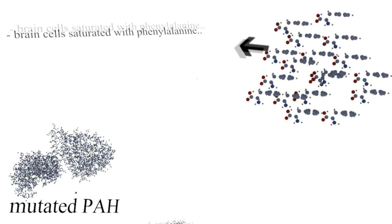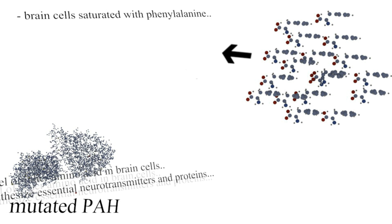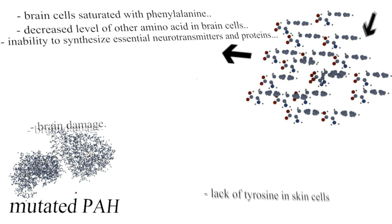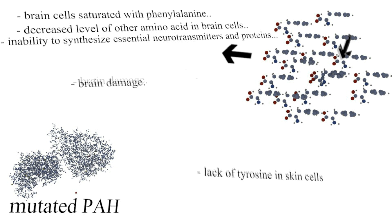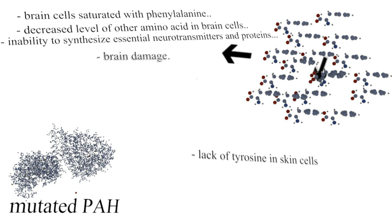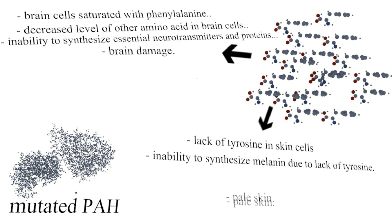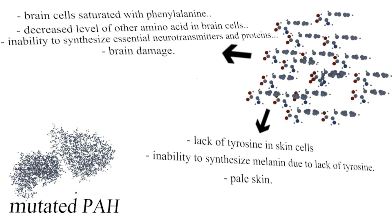Cognitive disability results due to an inability to synthesize vital neurotransmitters and proteins, which eventually leads to irreversible brain damage. As PAH catalyzes the formation of tyrosine and melanin production is dependent on the presence of tyrosine, changes in pigmentation are also mediated through this mechanism.